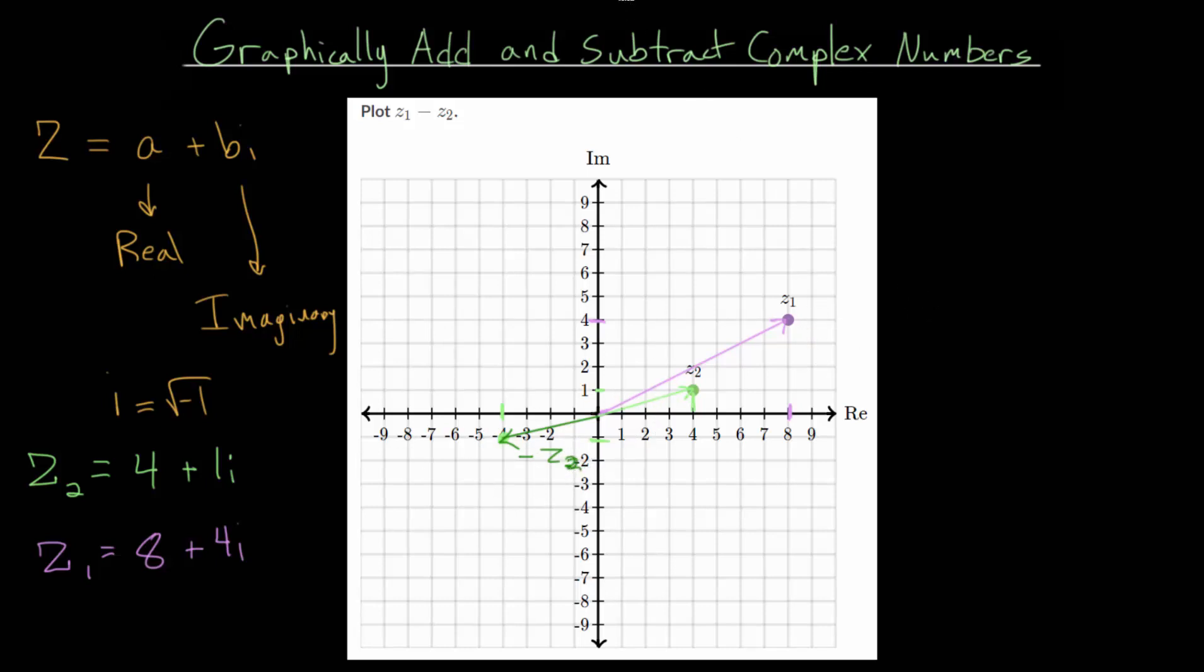And let's label this the opposite of z2, just so we can keep everything organized. And again, we're just going to slide this over here, that the beginning of this opposite of z2 starts at the tip of z1. And it will go left 4 units and down 1 unit, which will end it right here.